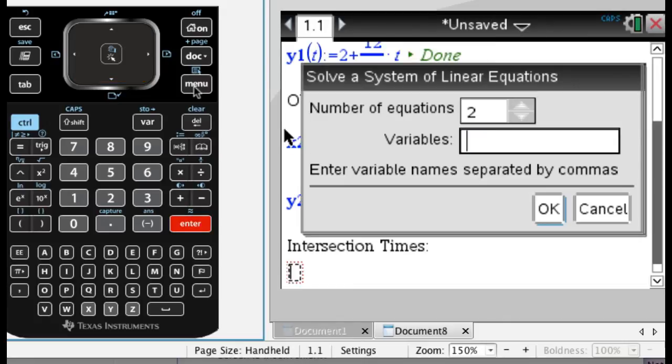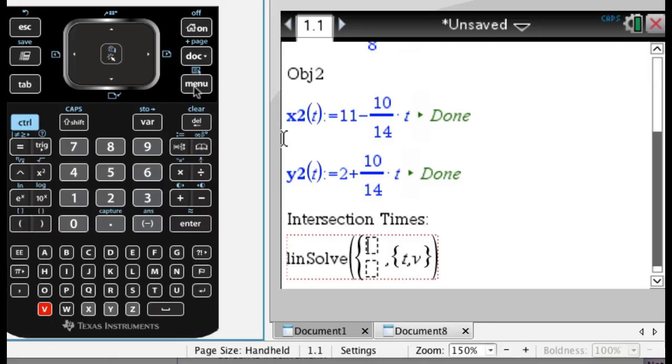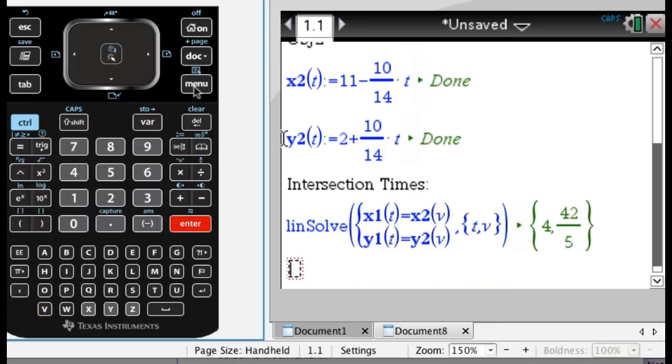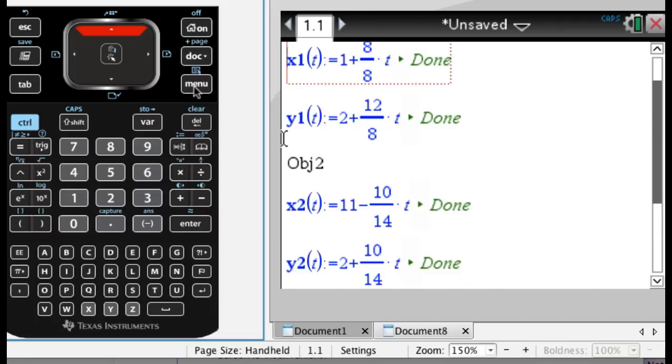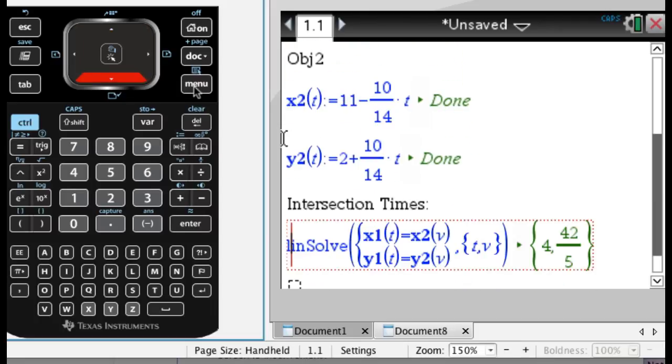Two equations. I'm going to change this to t and v. So this is exactly what you would have done on a calculator page. So x1(t) equals x2(v) and y1(t) equals y2(v). Okay and I'm going to press enter and it gives me those times. So what's happening is object 1 gets to the point at t so that's at 4 and object 2 gets there at v which is 42/5.